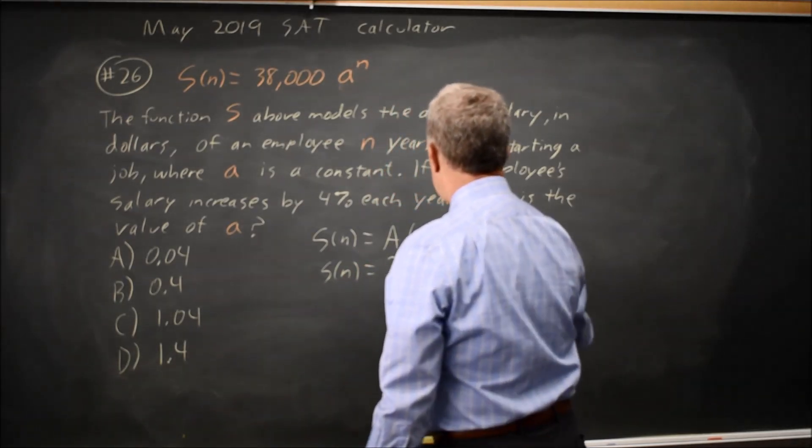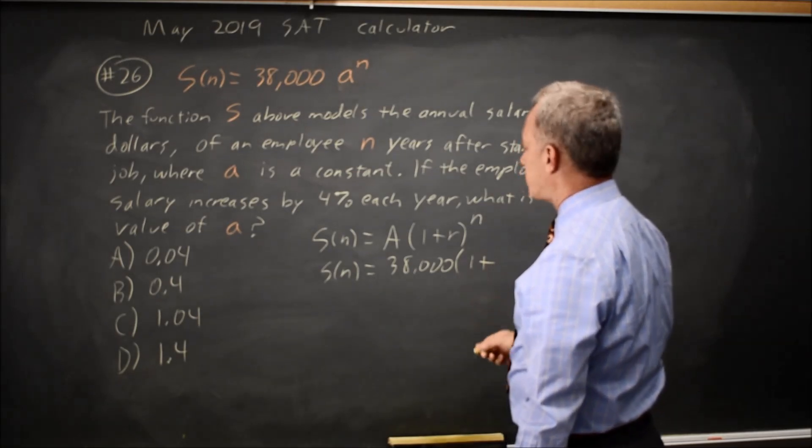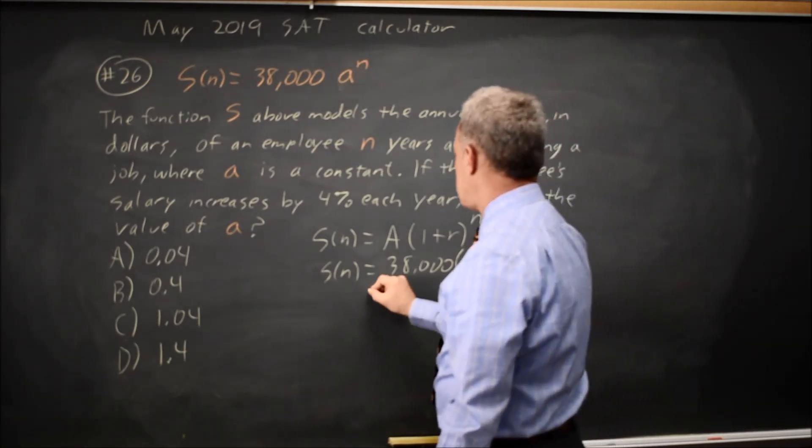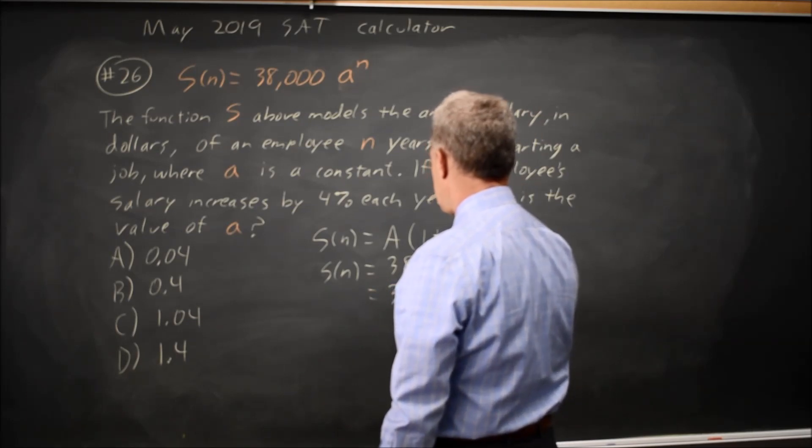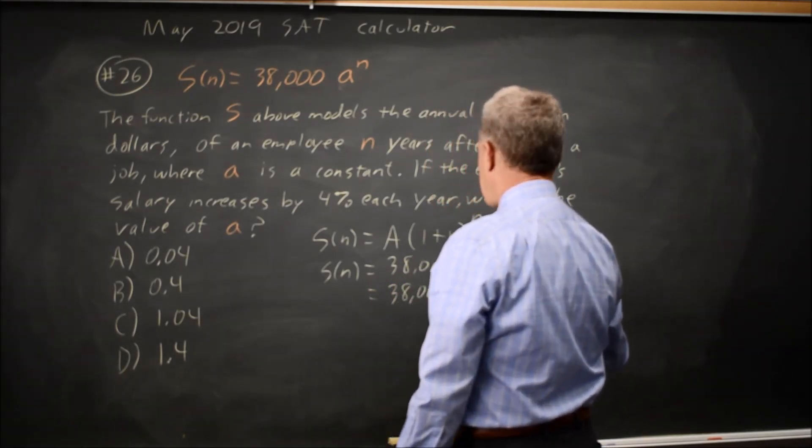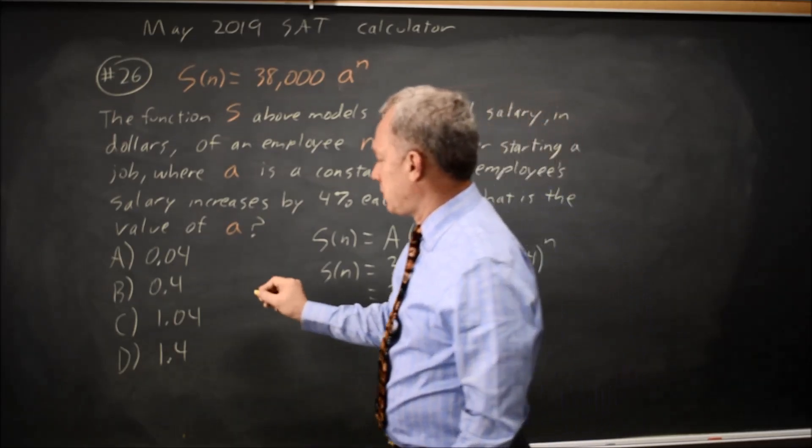38,000, times 1 plus your interest rate is 4%, which is 0.04 to the N, so that's 38,000 times 1.04 to the N, choice C.